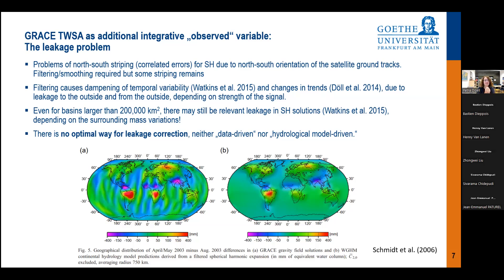This filtering causes dampening of temporal variability — strong seasonal amplitudes become smaller, and trends are also affected due to leakage to the outside and leakage from the outside, depending on signal strength. Even for basins larger than 200,000 square kilometers, there may still be relevant leakage in spherical harmonic solutions, according to Watkins et al. 2015, depending on the surrounding mass variations. Because of uncertain surrounding mass variations, there is no optimal way for leakage correction — neither data-driven nor hydrological model-driven.